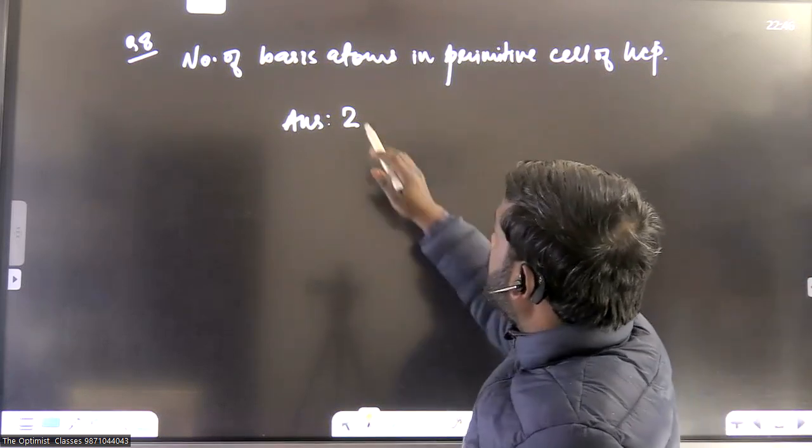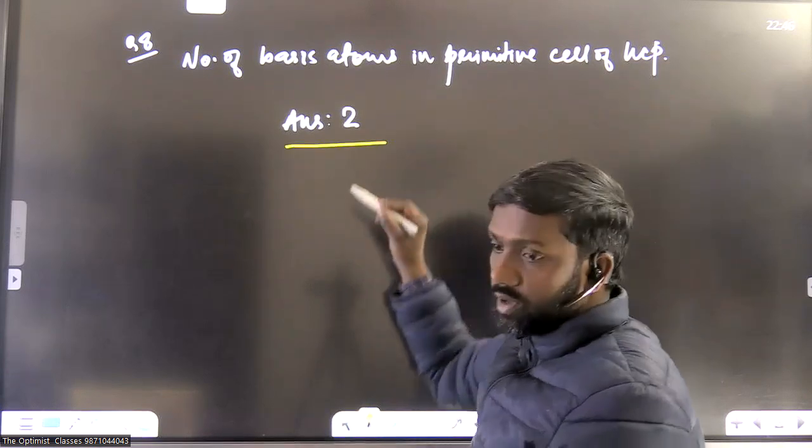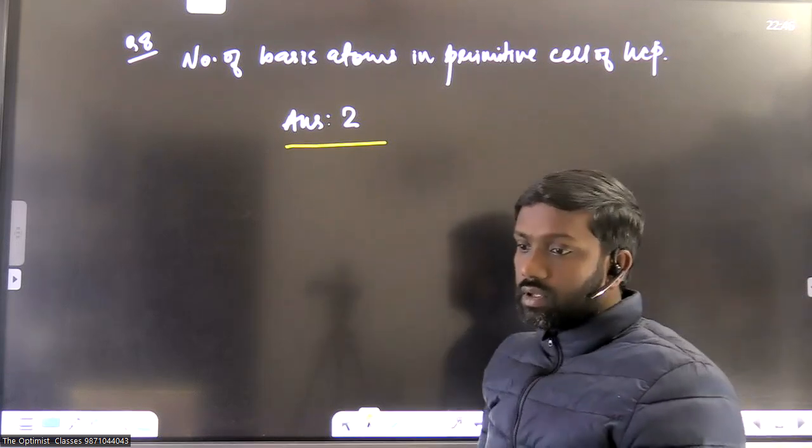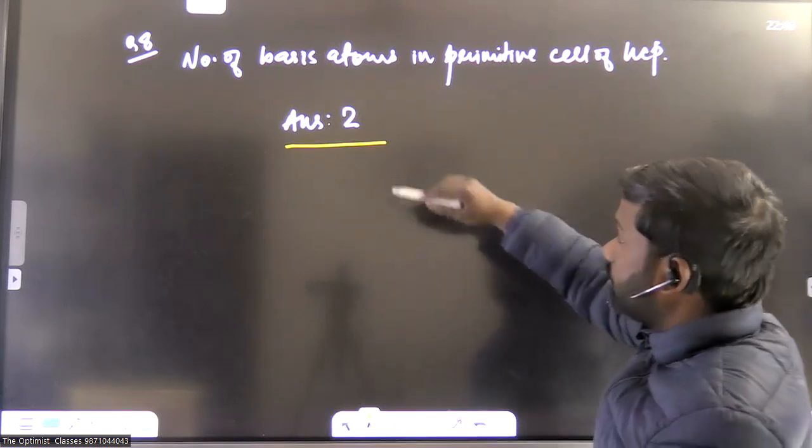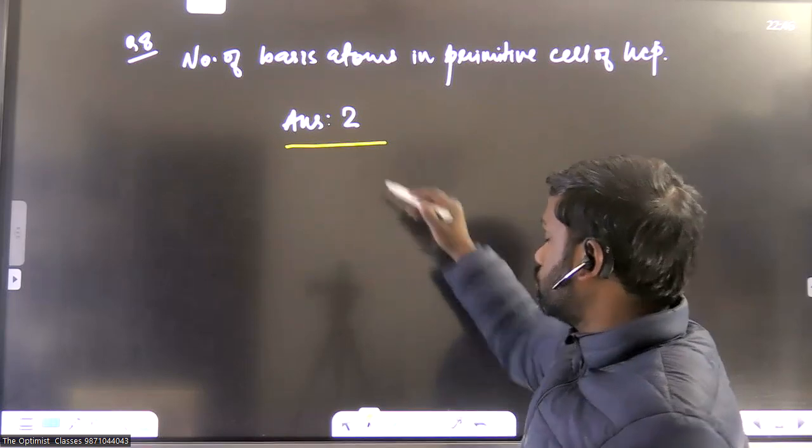Now, it says number of basis atoms in primitive cell of SCP. Answer is 2. Remember, for SCP and for diamond, actually diamond cubic structure, we get number of basis atoms per unit in a primitive cell, 2.